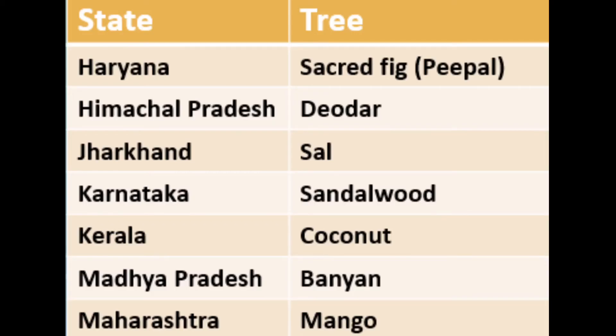Madhya Pradesh: Banyan. Maharashtra: Mango. Manipur: Tuna. Meghalaya: White Teak. Mizoram: Ironwood. Nagaland: Alder.